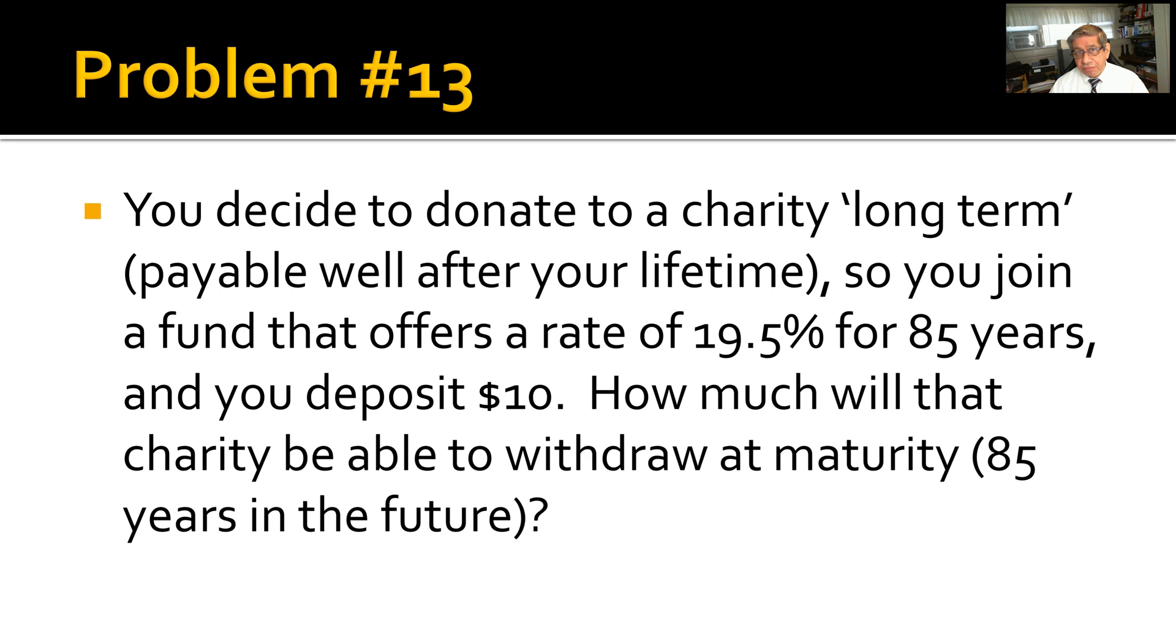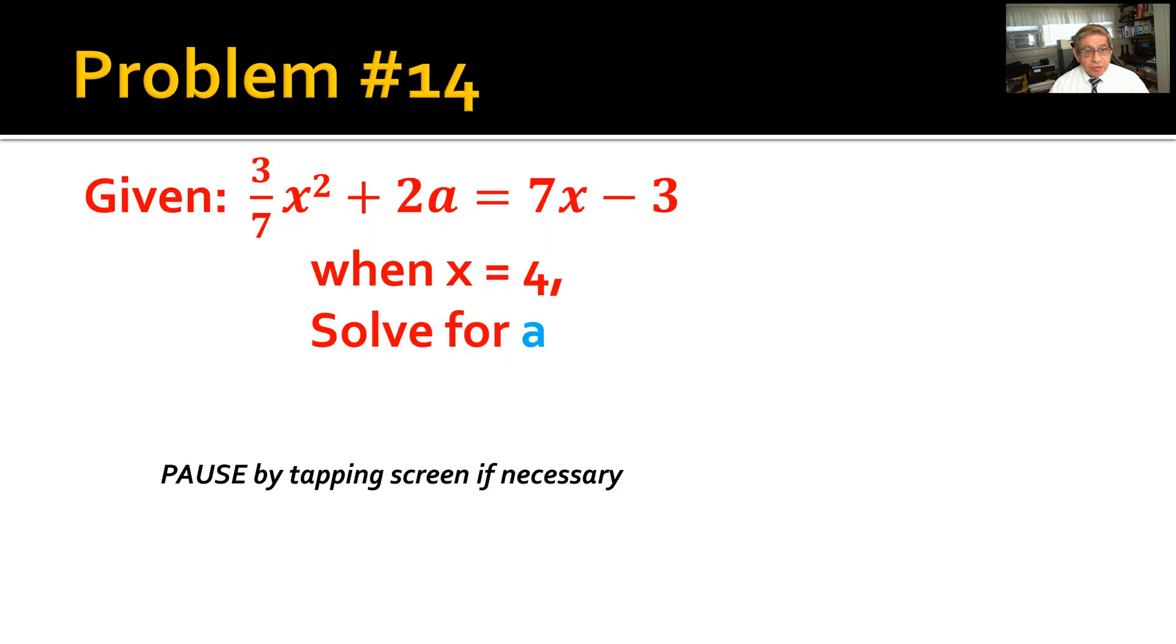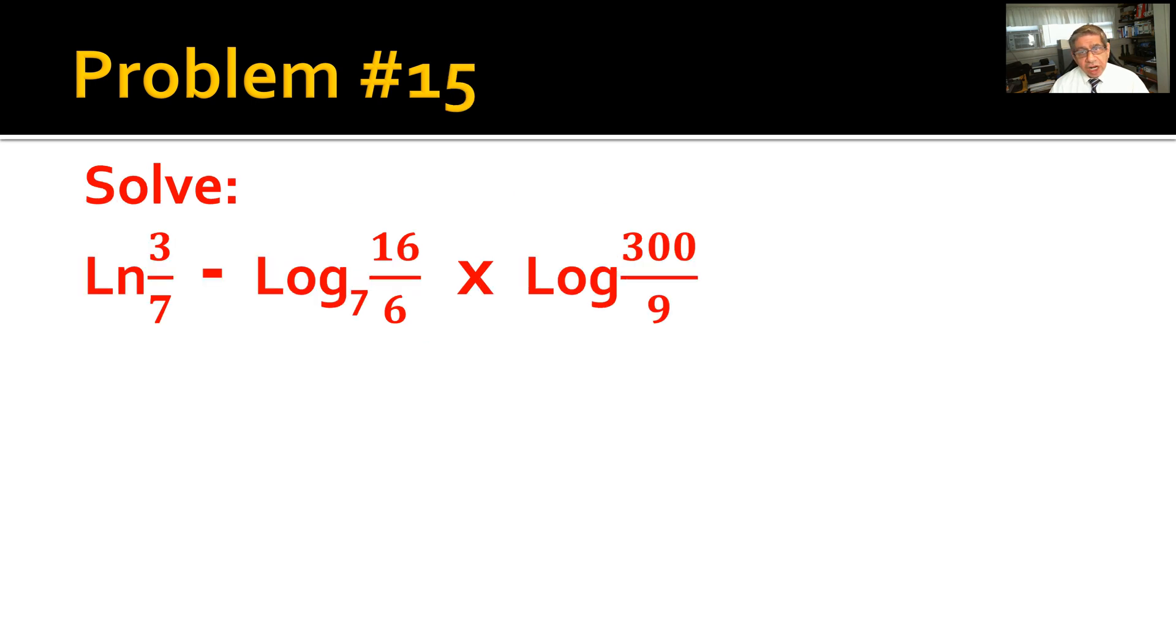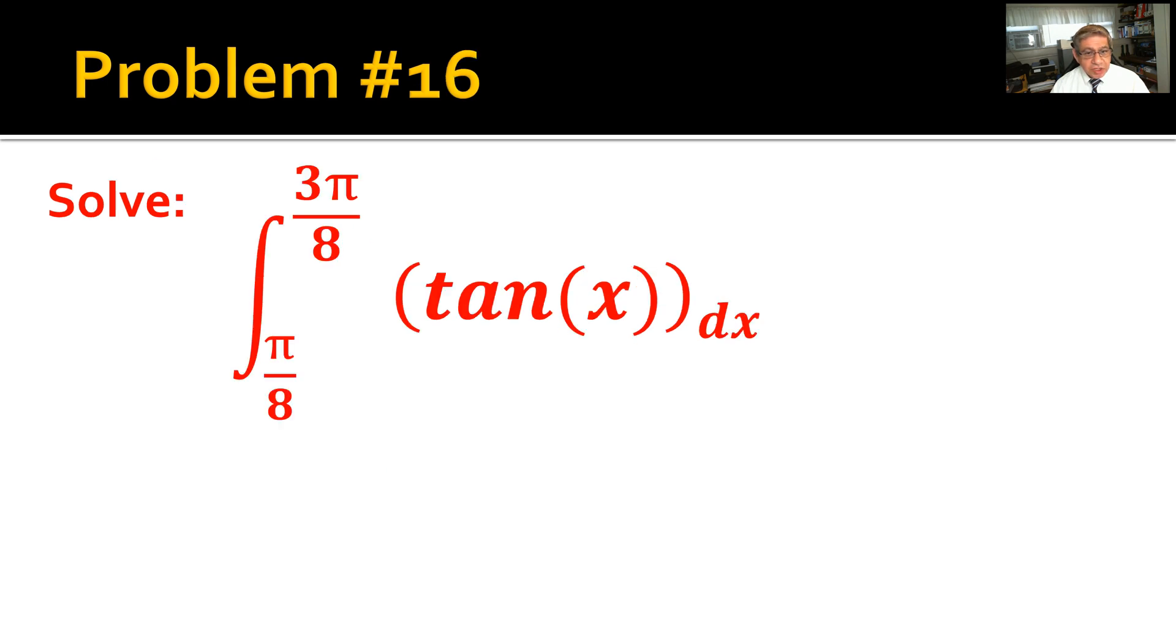Problem number 14: Given 3/7 x² + 2a = 7x - 3 when x equals 4, solve for a. Problem number 15: Solve natural log 3/7 minus log base 7 of 16/6 times log 300/9. These are the possible answers to that equation.